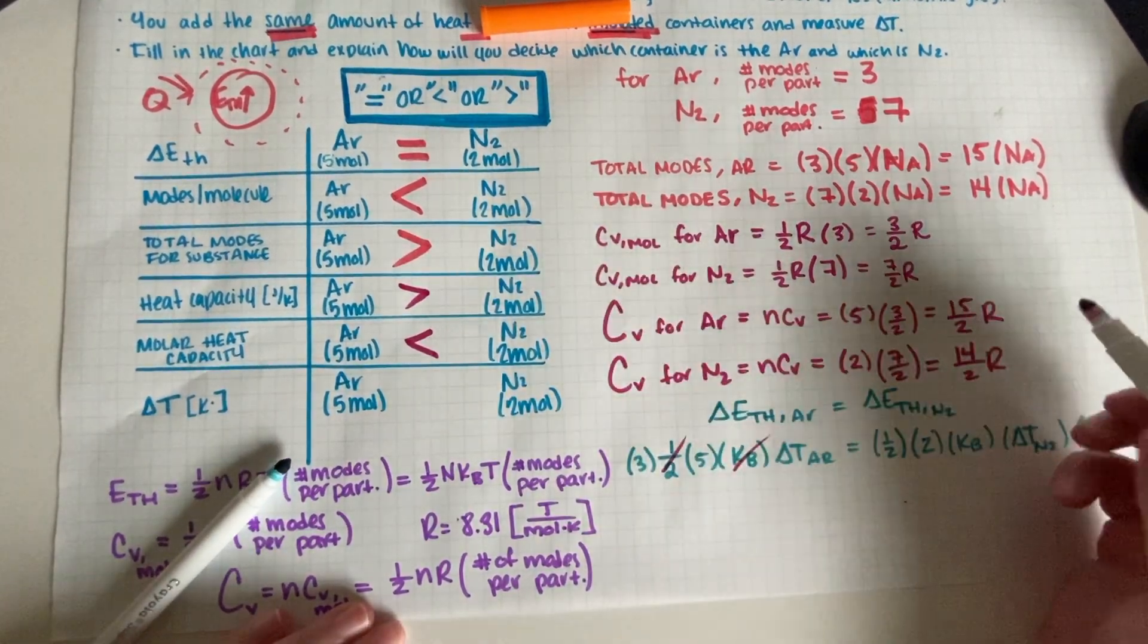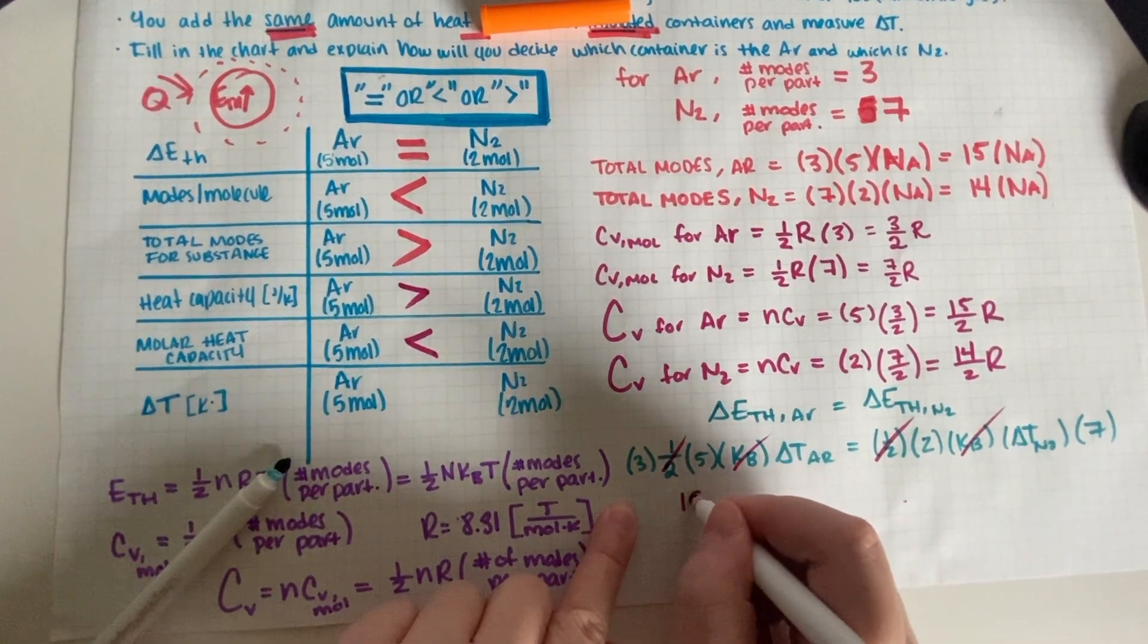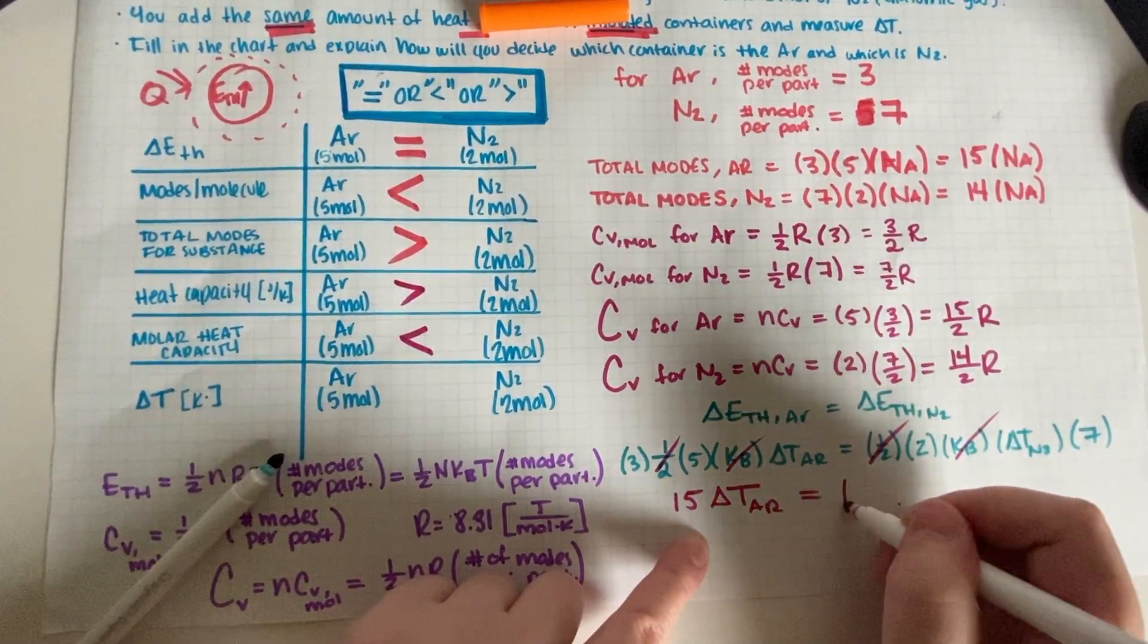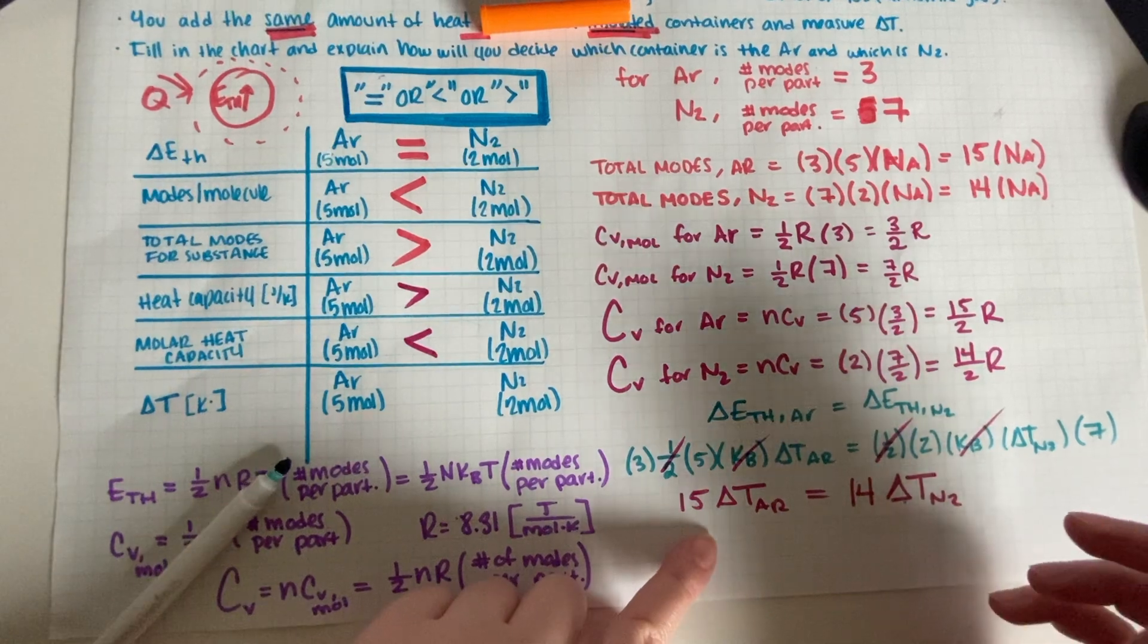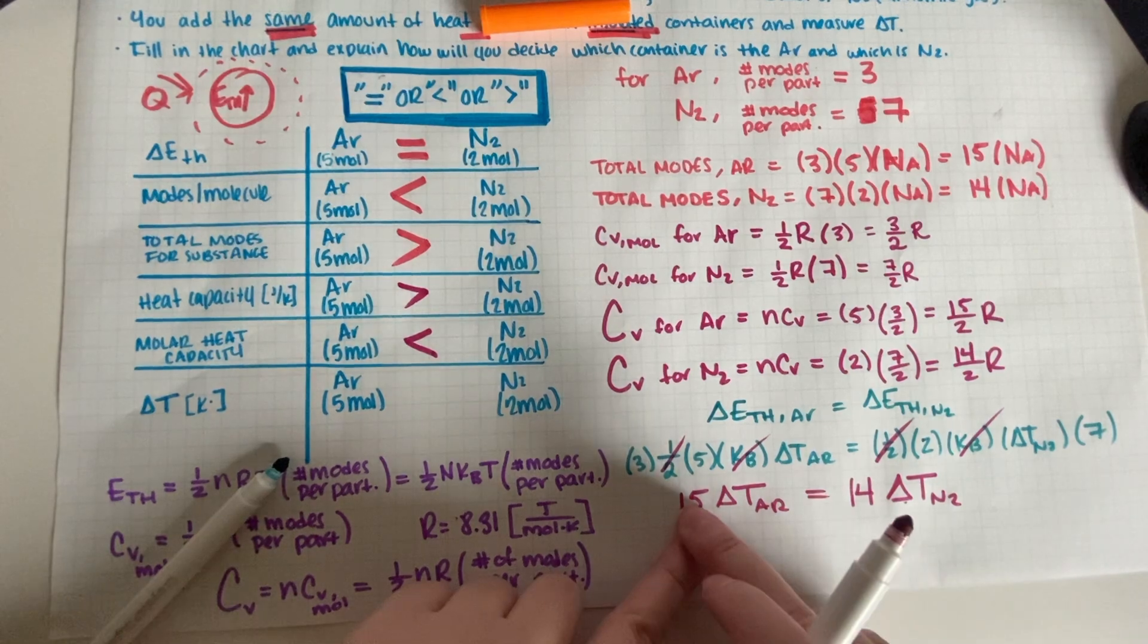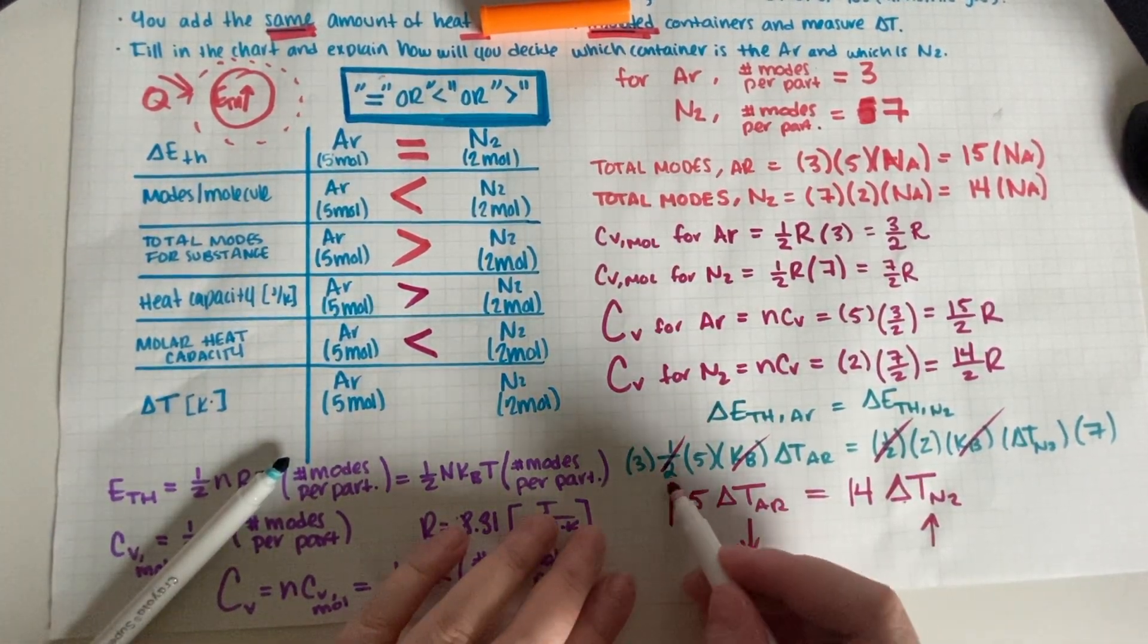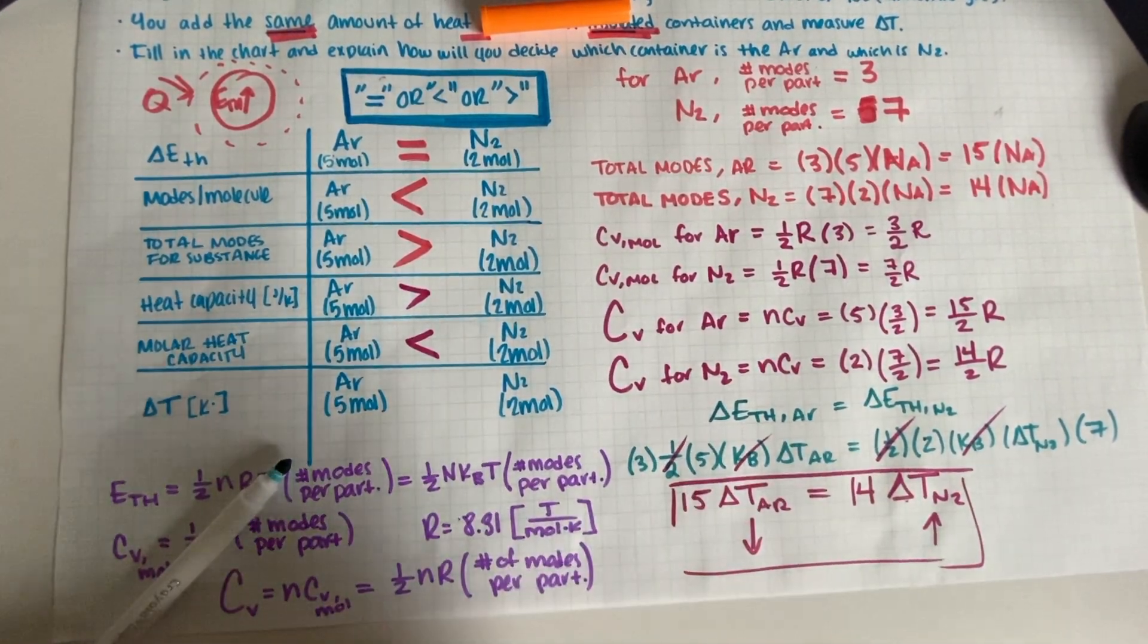Cancel out the halves and the kb's. Cancel the halves and the kb's. And on this side we have 15 times delta t Ar has to be the same as 14 times delta t N2. These numbers have to be equal to each other, and 14 is less than 15, so in order to balance that out, this one must be greater than this one. If they have to multiply to the same number and this one has to be a little bit higher, therefore this is the answer.